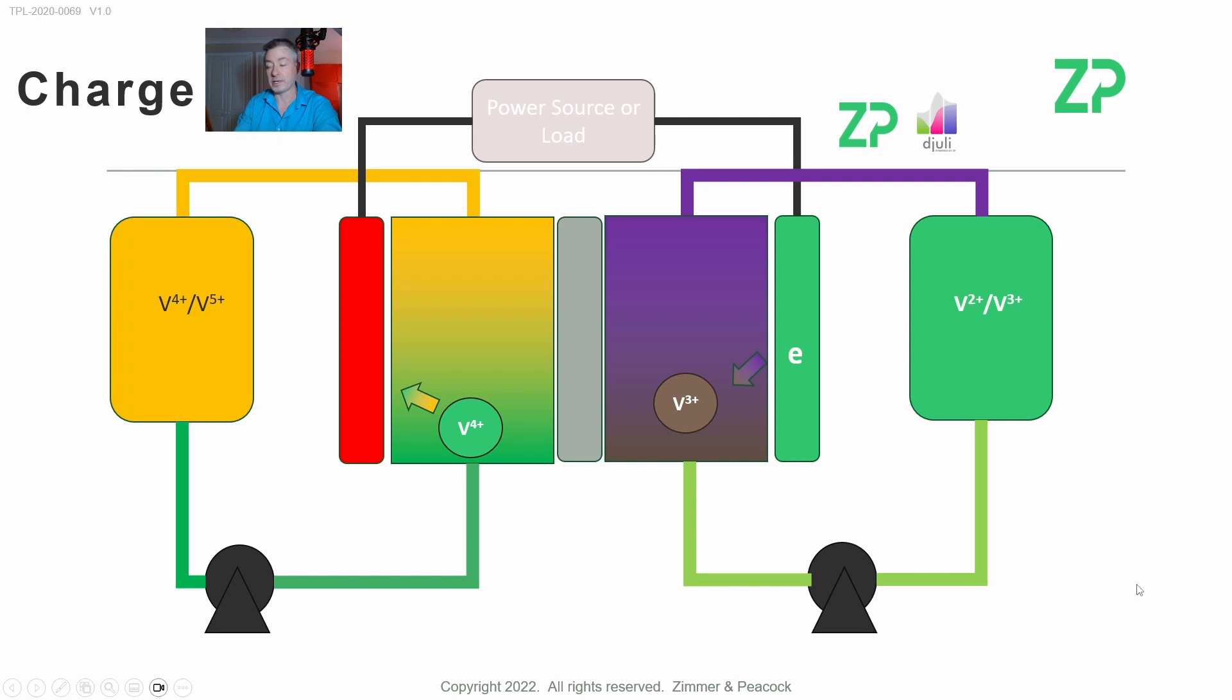by another pump from its reservoir. The vanadium three plus becomes vanadium two plus (V2+). At the same time, the proton—or hydrogen ion, hydronium ion, people give it different names—but I'll say proton